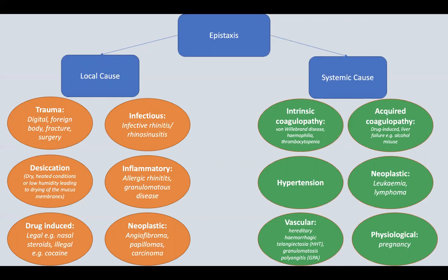Systemic factors include intrinsic bleeding disorders such as haemophilia or von Willebrand's disease, acquired bleeding disorders due to liver or renal disease or haematological malignancy, antiplatelet or anticoagulant medications, vascular abnormalities such as HHT, also known as Osler-Weber-Rendu syndrome, or due to mucosal changes that occur during pregnancy.